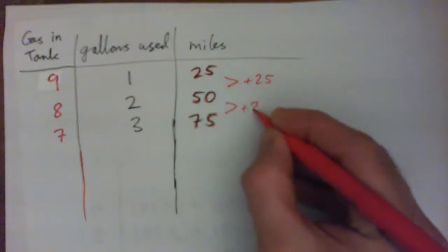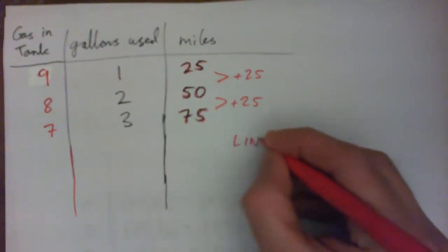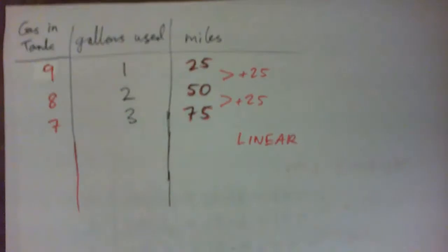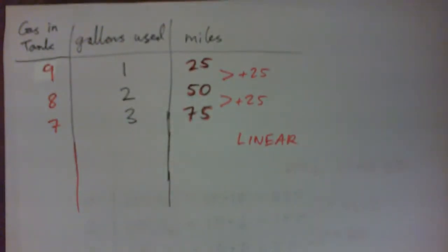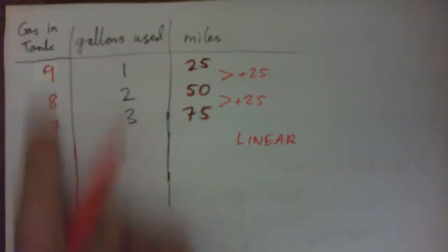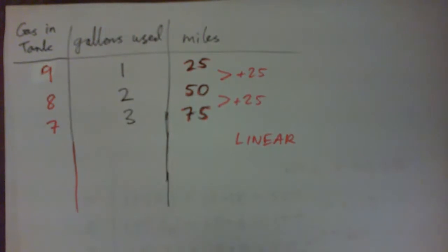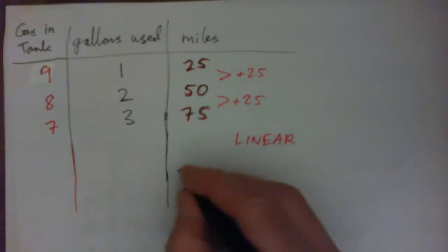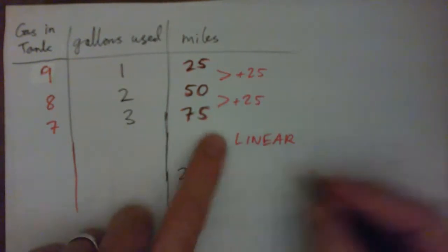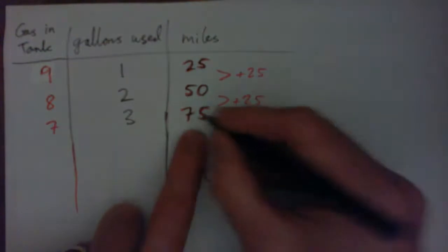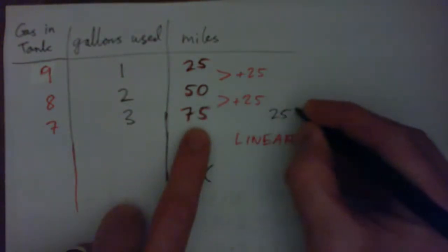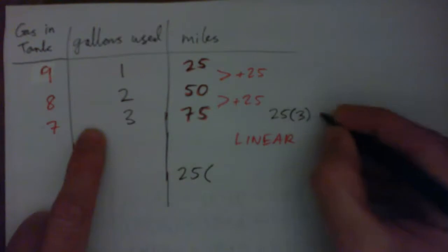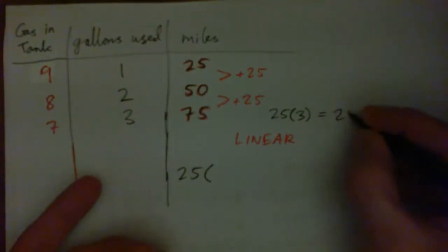Right, and to come up with a formula for that - formula for the gas in the tank - we could say that it's 25 times... you know, so this would be kind of like, for 75 miles, that'd be like 25 miles times 3, right? Or let's say we started with 10 in the tank, it's 25 times 10 minus 7, right? 7 gallons left in the tank.